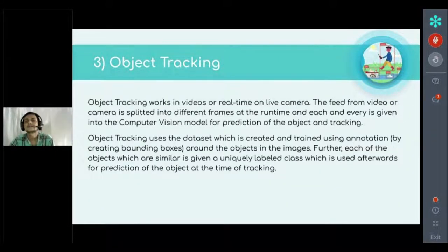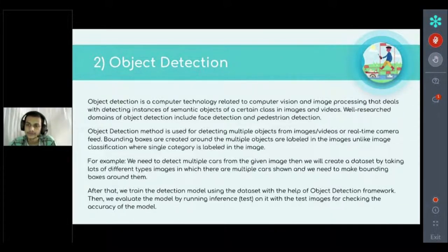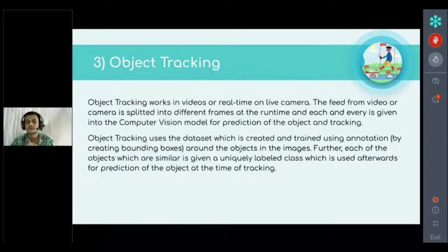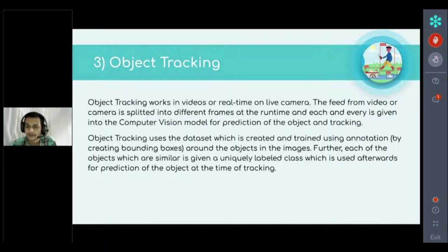Object tracking is an enhanced version of object detection. It works on videos or real-time live camera feeds. While object detection works on images and videos, it cannot efficiently track the motion of a person. Object tracking takes input from a video or live camera, divides it into smaller frames, and passes each frame into the trained model to produce output — it is very efficient and faster than object detection.